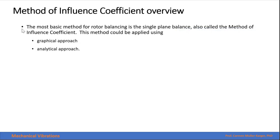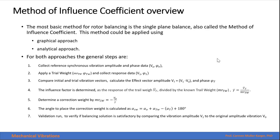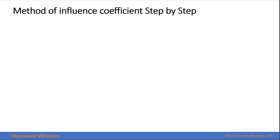The most basic method for rotor balancing is a single plane balance, also called the method of influence coefficient. This method could be applied using a graphical approach or an analytical approach. There are seven steps for either approach, graphical or analytical. I will explain each of these steps separately in the following slides.